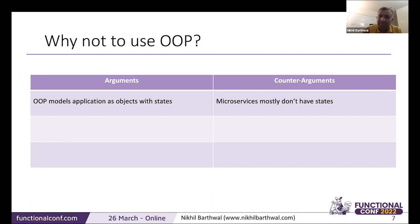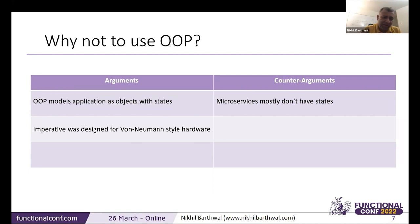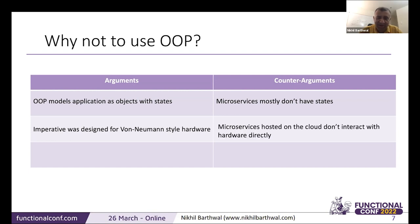Most modern OOP languages implement a lot of functional programming — C# has lambda functions and is very functional in nature, so the line between OOP and functional is blurring. Object-oriented programming comes from imperative programming, which was invented to interact with Von Neumann hardware. But microservices are hosted on cloud platforms or Kubernetes — they don't interact with hardware directly and almost always run on some kind of virtual machine. So it doesn't make sense to use imperative programming for these services.